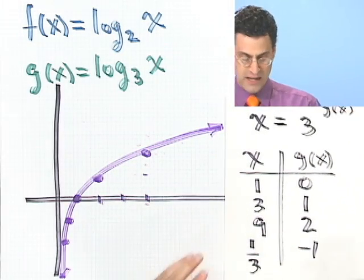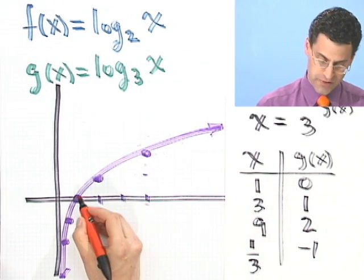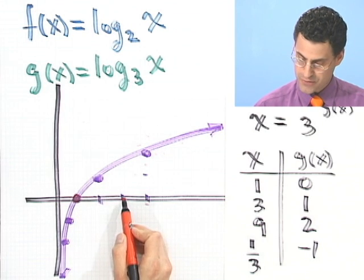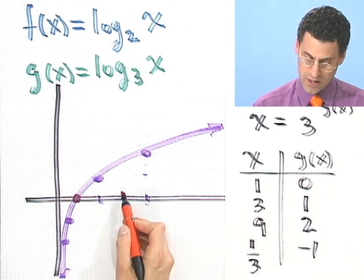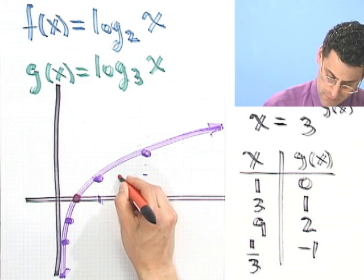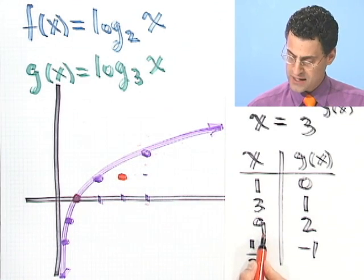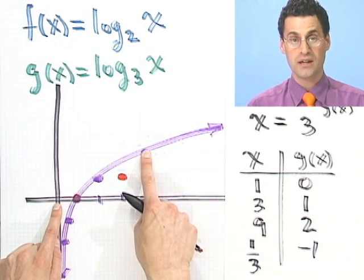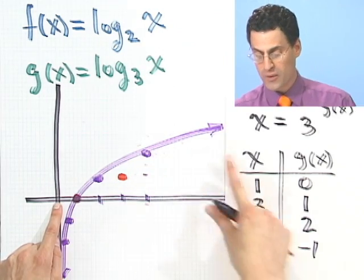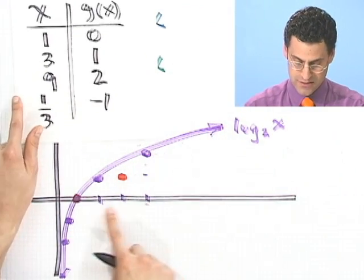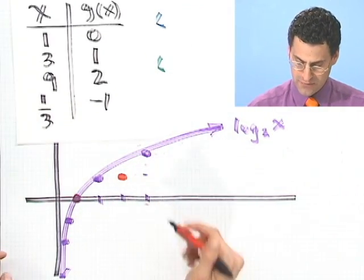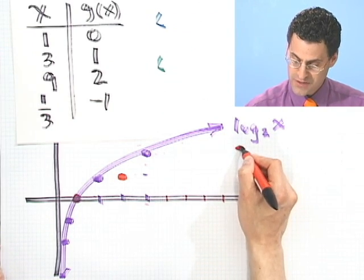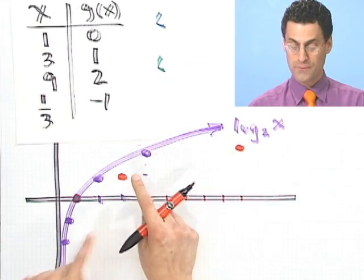Those points should do it since I know the general shape now. Let's graph these points. At 1 we're at 0. So this point is a common point with the previous graph. Then at 3, 1, 2, 3, I'm going to be at 1. So now I'm only up here at 1. At 9, I'm going to be at 2. Remember before, at 4, I was at 2. Now to get to that height of 2, I got to go all the way over to 9. So this is growing even slower than the first one.